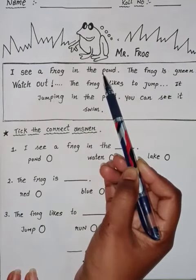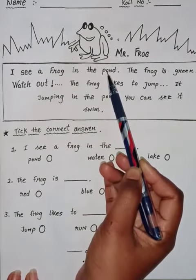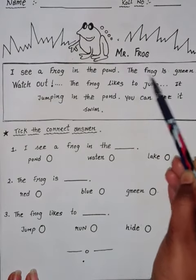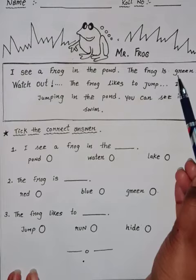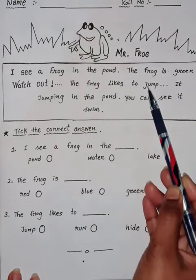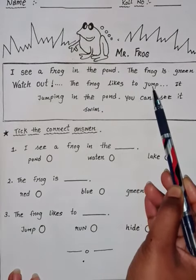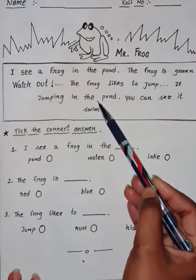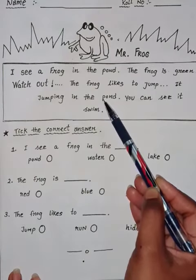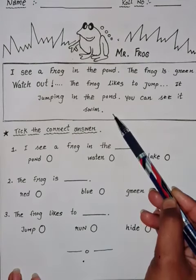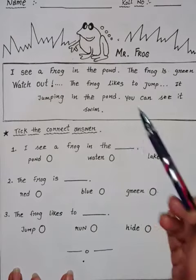I see a frog in the pond — मैंने तालाब में एक frog देखा। Frog को मेंडक कहते हैं। The frog is green — frog हरे रंग में होता है। Watch out, the frog likes to jump — मेंडक जंप करते हैं। It is jumping in the pond — वो जंप करके तालाब में चले जाते हैं। You can see it swim — आप उसे तैरते हुए भी देख सकते हो।